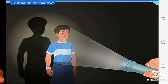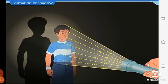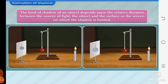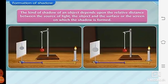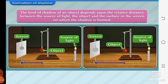So, what have we learned? The shadow of an object is formed only when light does not pass through the object. The kind of shadow it forms depends upon the relative distances between the source of light, the object and the surface or the screen on which the shadow is formed.